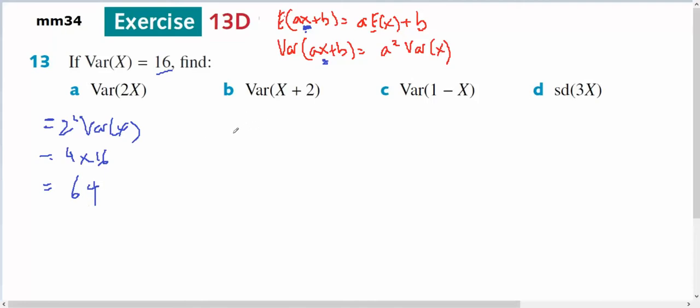The variance of x plus 2 will be the same as the variance of x, therefore it's going to equal 16.